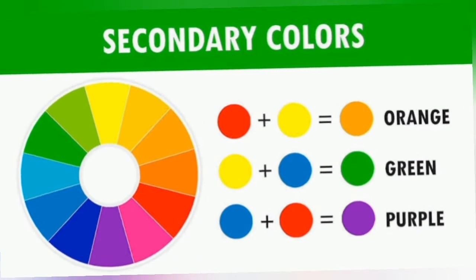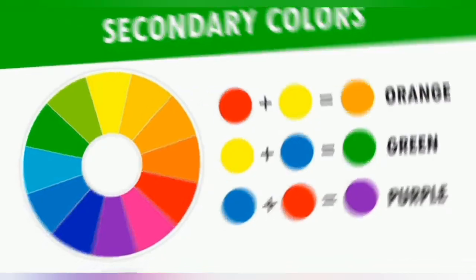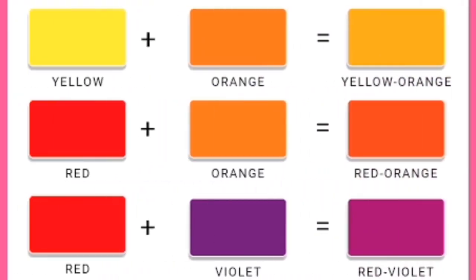Secondary colors are colors that are gotten when two primary colors are mixed together, and such colors include orange, green, and purple. We also have tertiary colors, which are a combination of both primary and secondary colors.